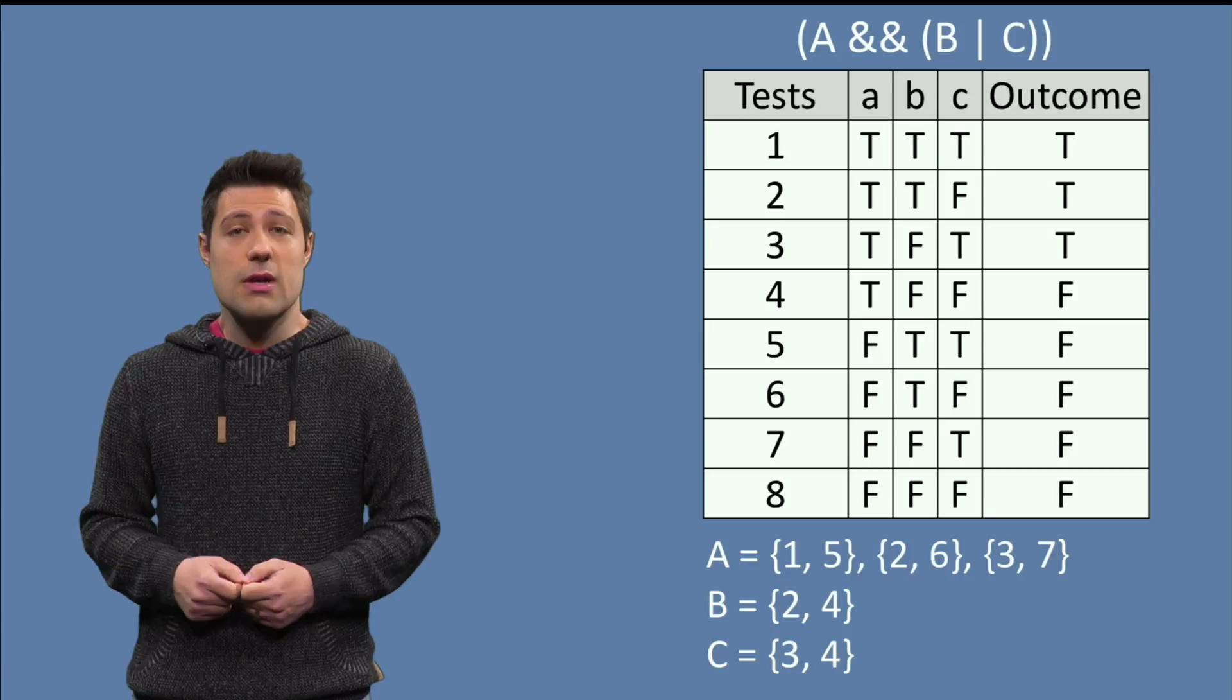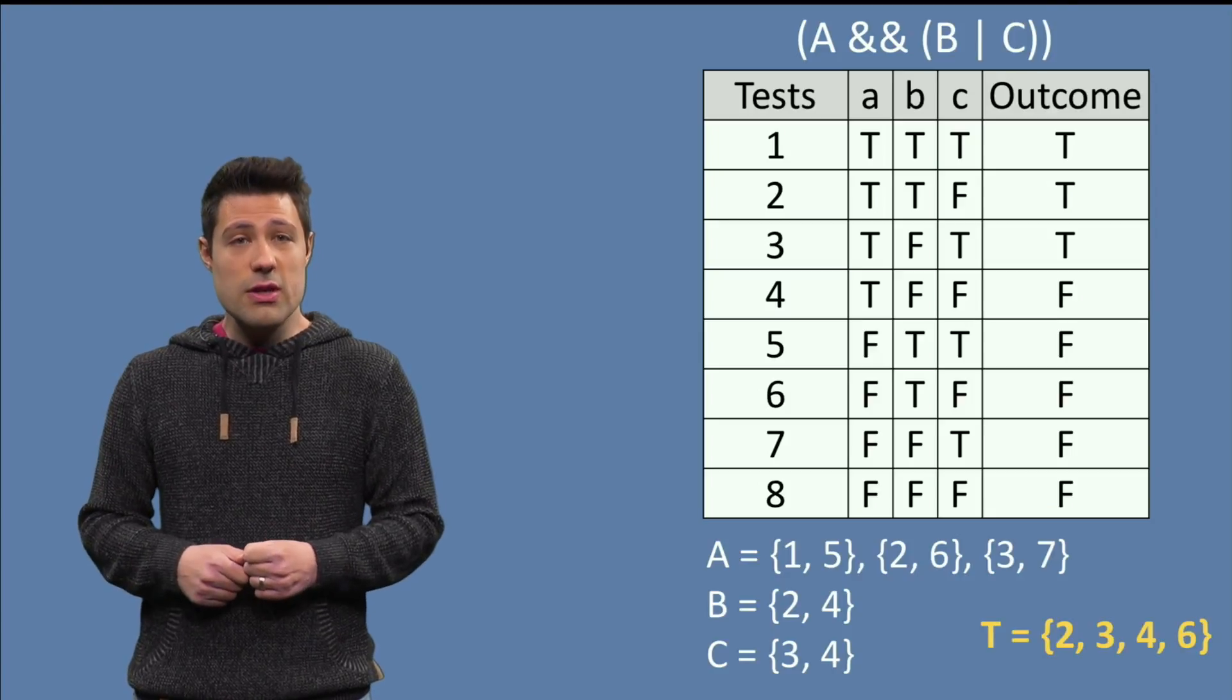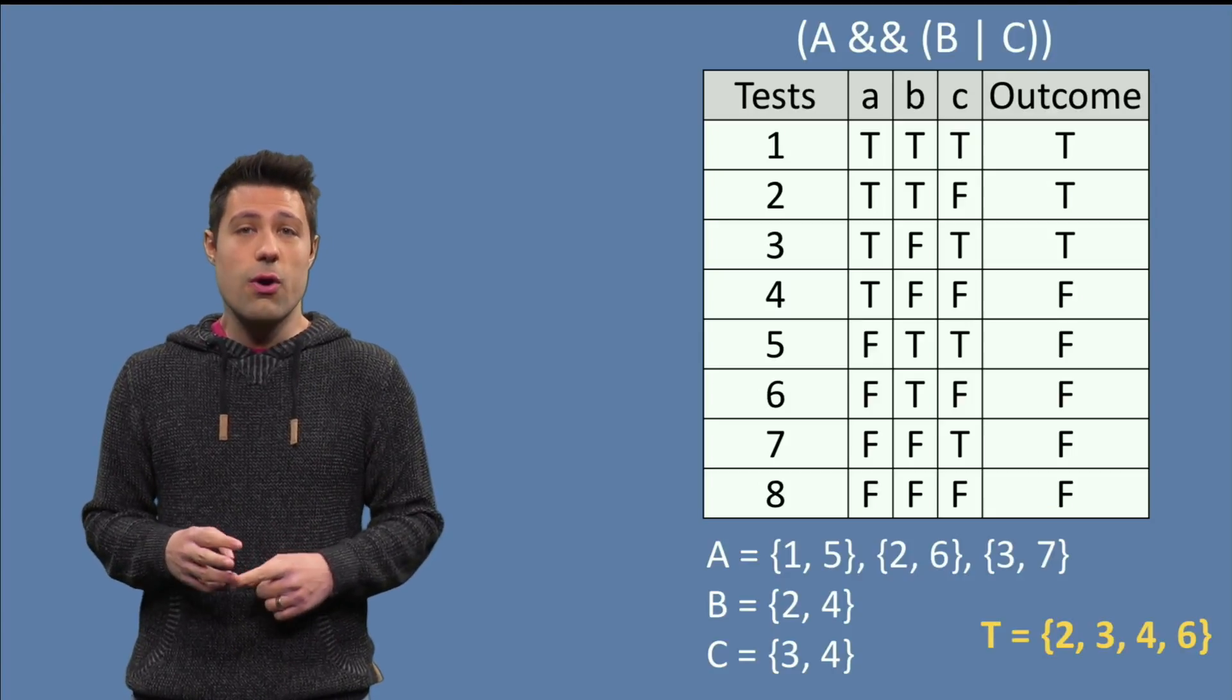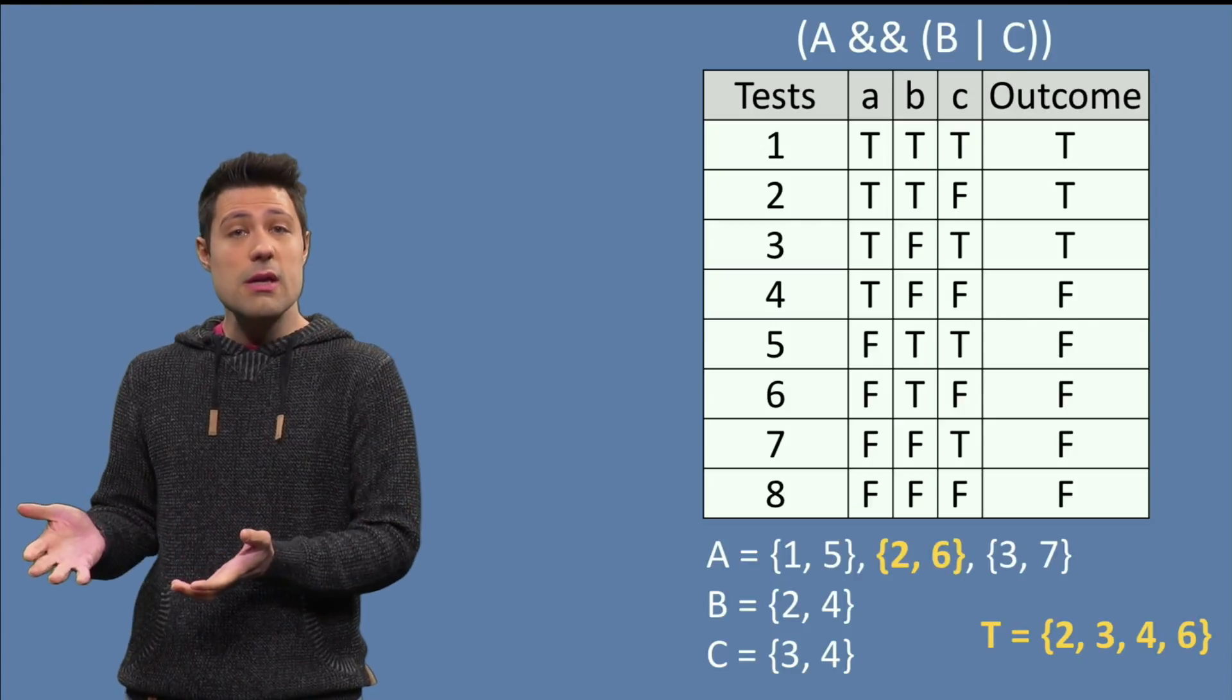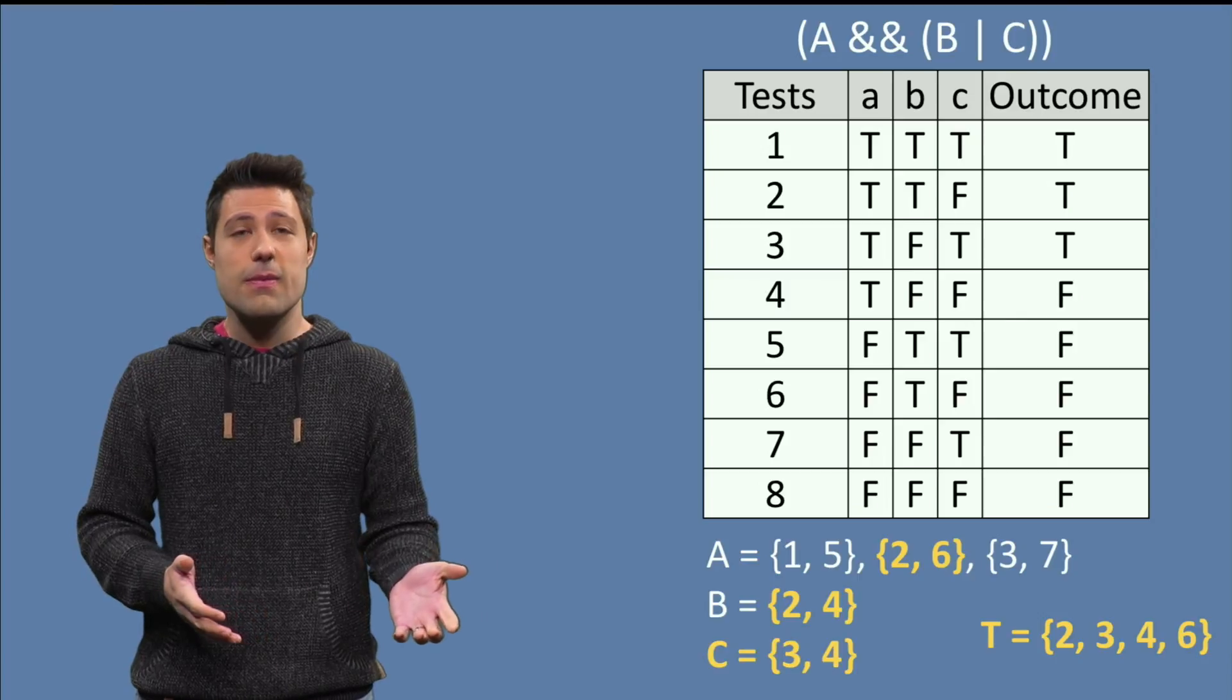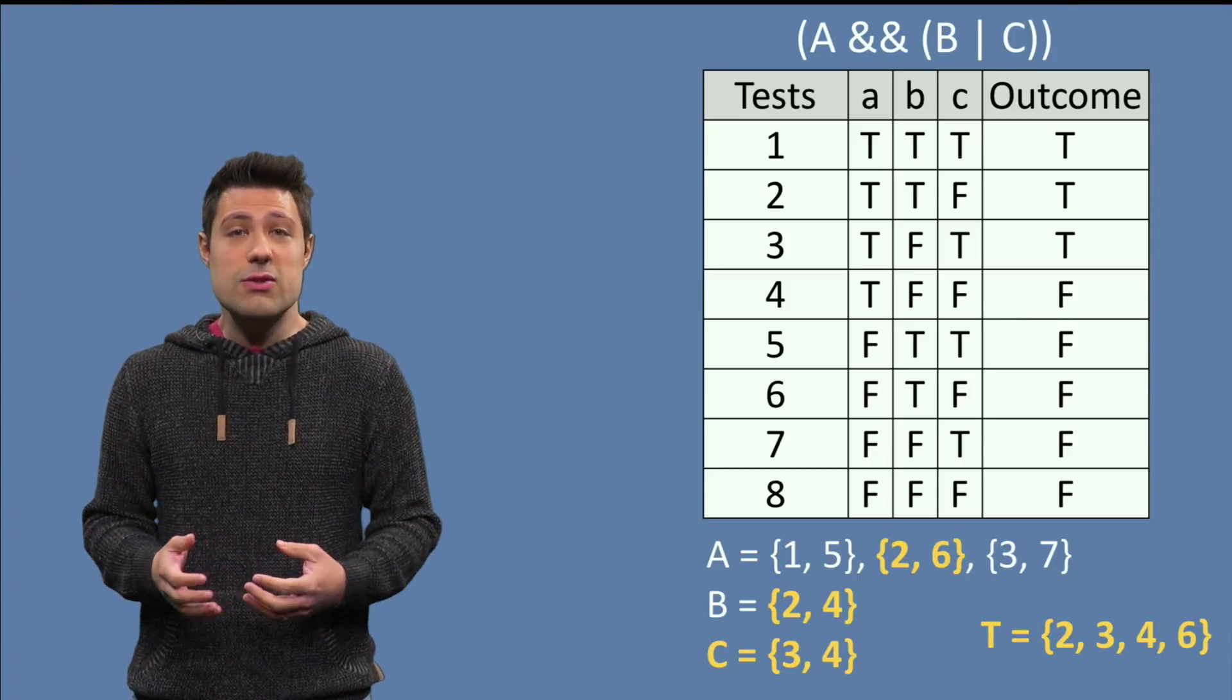Now, we should try to minimize the number of tests. Take a look. If we actually execute tests 2, 3, 4 and 6, we are actually executing a pair for A, for B and for C. Great! 4 tests instead of 8.